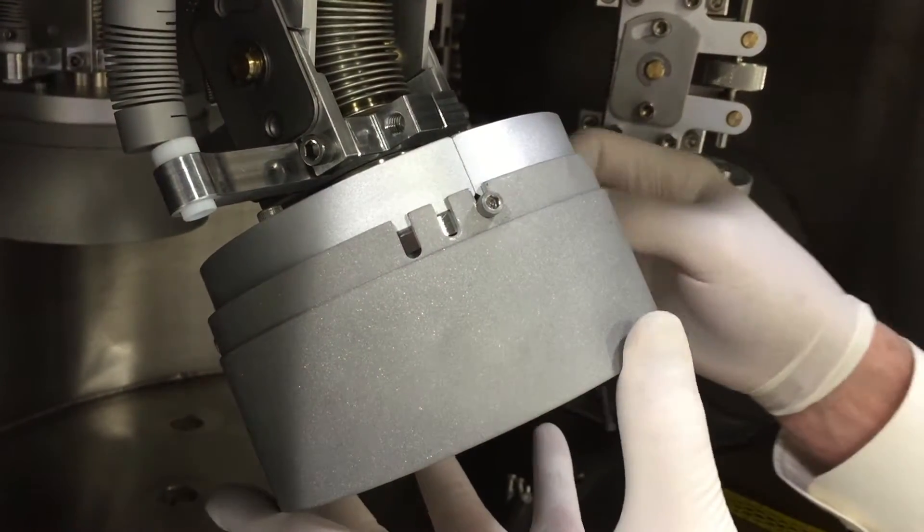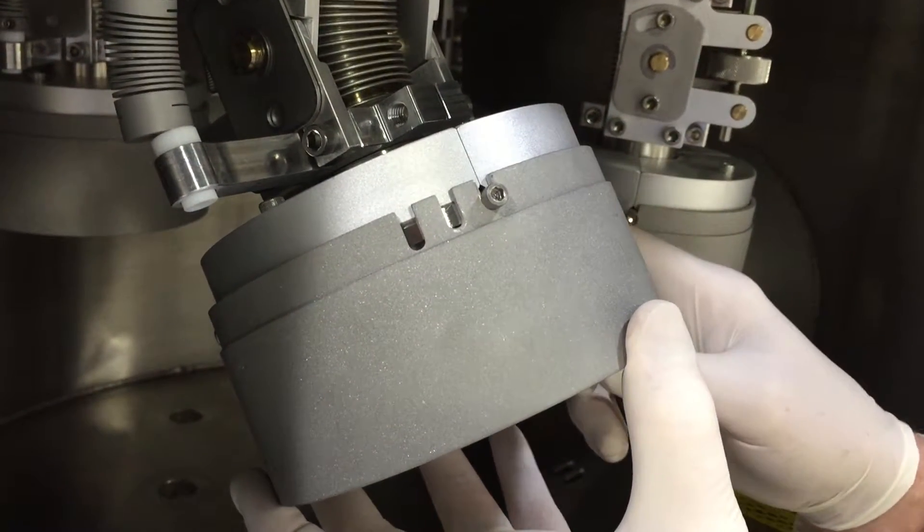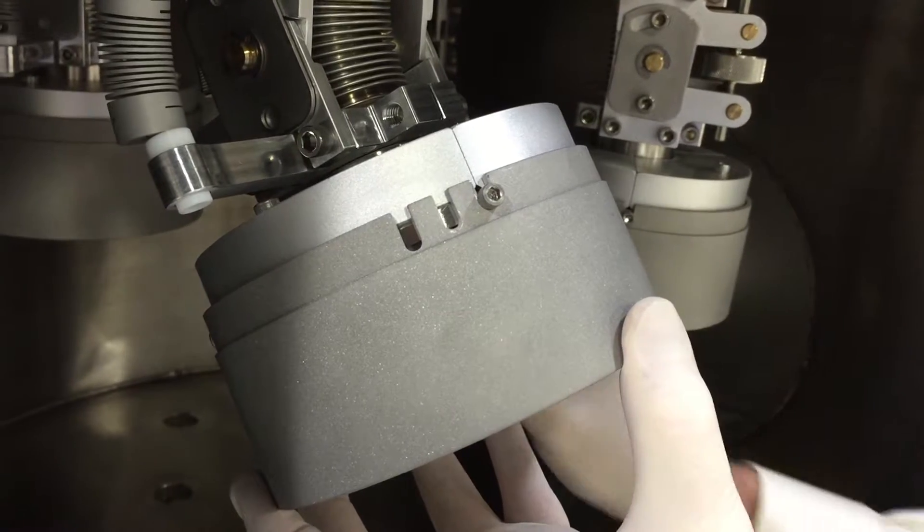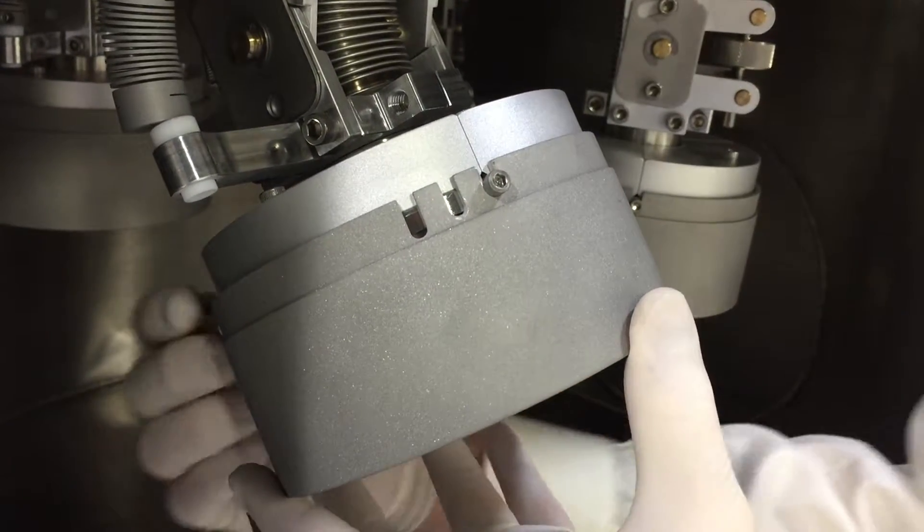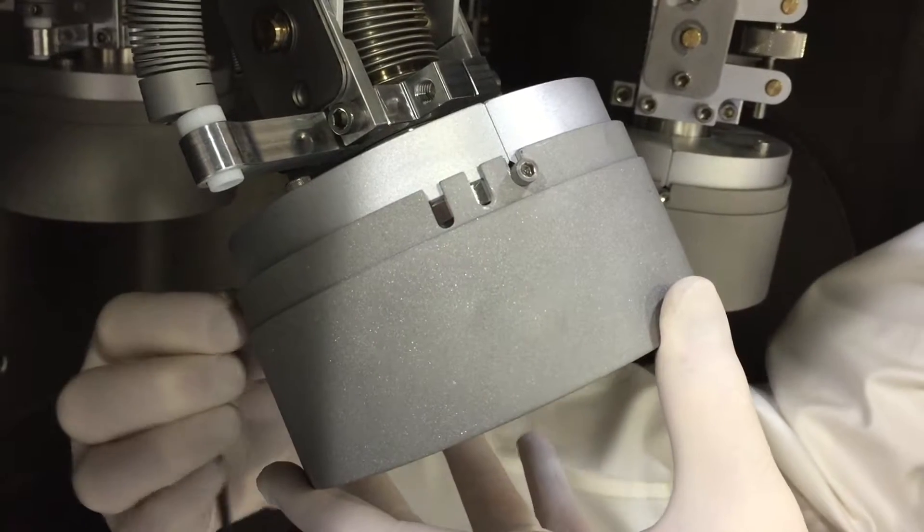Changing a Denton Vacuum Cathode in a Discovery sputtering system is a trivial process. Loosen the three set screws holding the outer target shroud assembly.